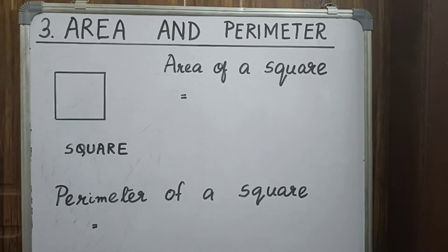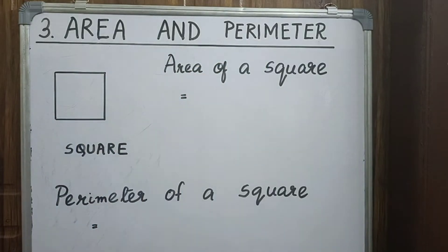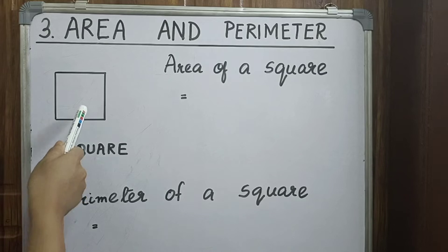Hello students, welcome back to my channel. Today in our class we are going to find out the area and perimeter of a square, rectangle, and a triangle. So first let us find out the area and perimeter of a square.